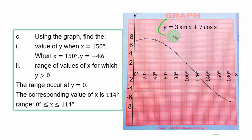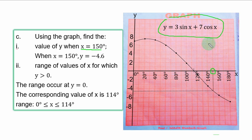To find the value of y when s is 150 degrees, go to the s-axis. 150 degrees is between 140 and 160. If you trace that point upward it cannot meet the curve, so the best option is to trace that point downward to meet the curve, then trace across to the y-axis.